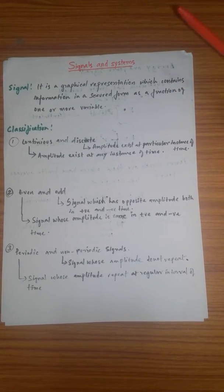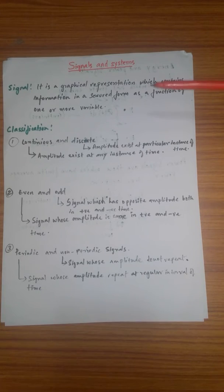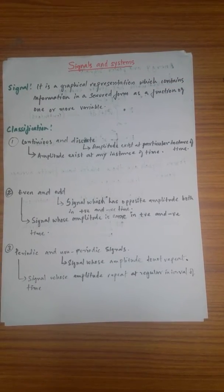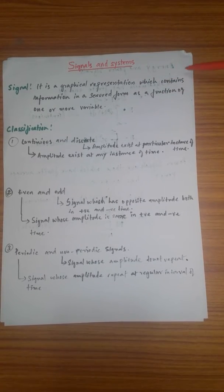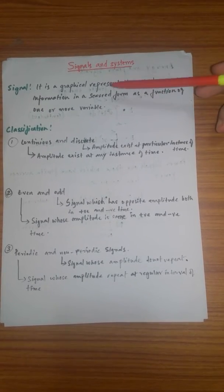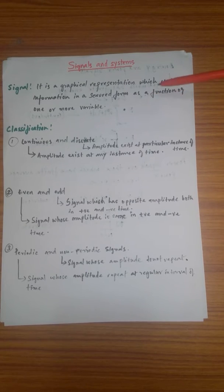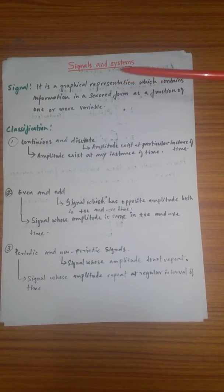Hey guys, what's up? It's Sandeep Roy here and I'm going to teach you today signals and systems. First thing that comes to our mind is: what is a signal? A signal is a graphical representation which contains information in a circuit form as a function of one or more variables.